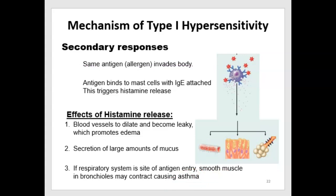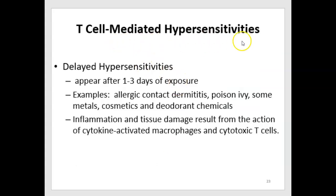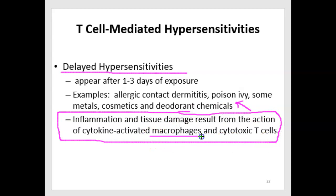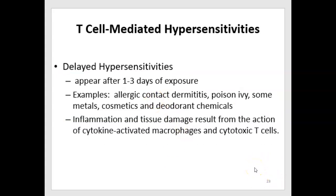Cell-mediated hypersensitivities that involve T lymphocytes are usually much more delayed — symptoms appear after one to three days of exposure. We've learned ways to treat these by suppressing the immune system with corticosteroids. Examples include dermatitis caused by poison ivy, metals, cosmetics, or chemicals in deodorants. You get inflammation and tissue damage as macrophages and cytotoxic T cells are activated, but usually it's local and not widespread, making it much more treatable. That's the last of the immune system — thank you very much for listening.